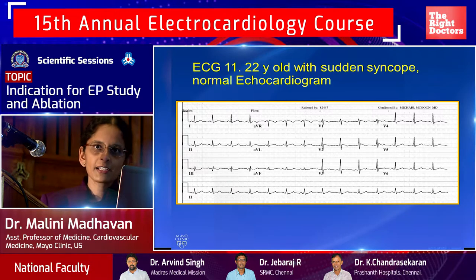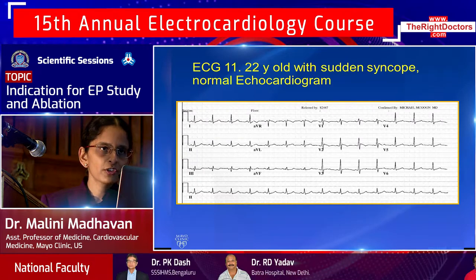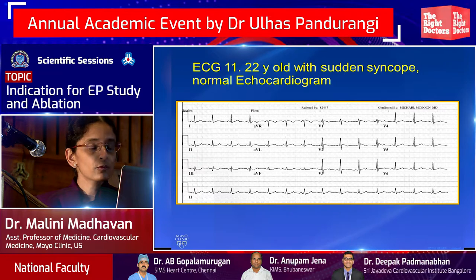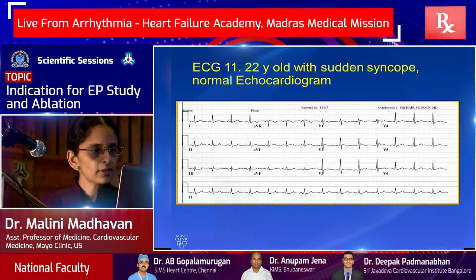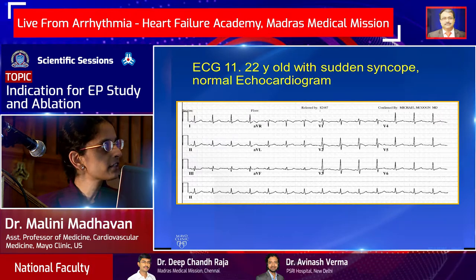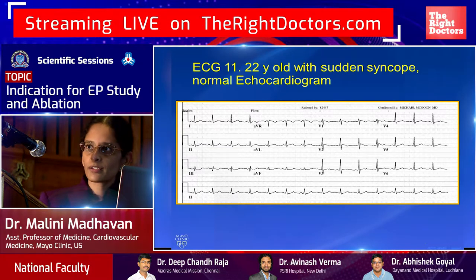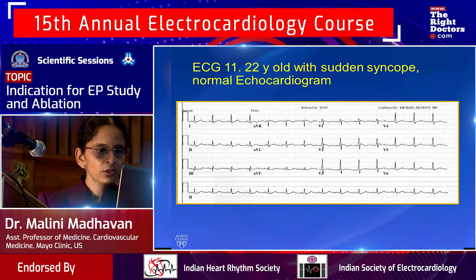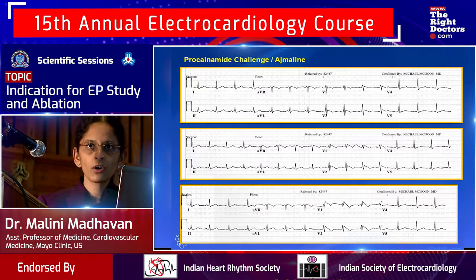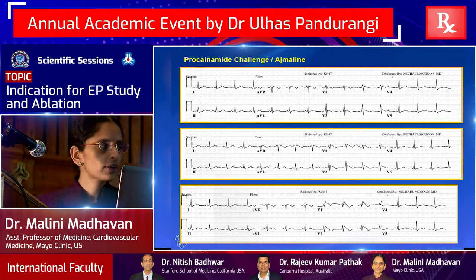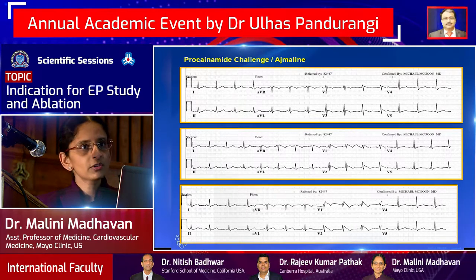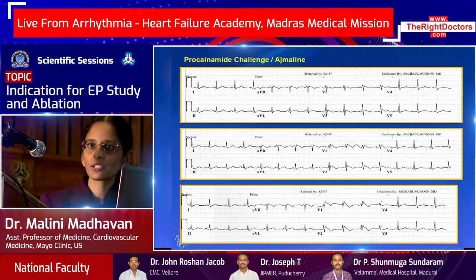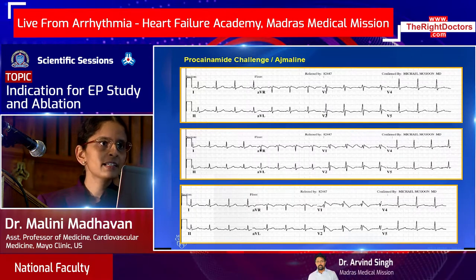EP study can also involve drug challenges rather than catheters. Example: a 22-year-old presenting with sudden syncope and an ECG showing a Brugada-type pattern that doesn't quite meet the 2mm Type 1 or Type 2 diagnostic criteria. Bring this patient to the EP lab and give IV procainamide — or Ajmaline if available, which is superior. With increasing procainamide doses, the classic Type 1 Brugada pattern emerges, confirming the diagnosis and indicating an ICD.